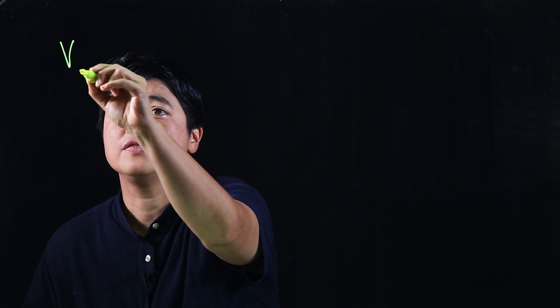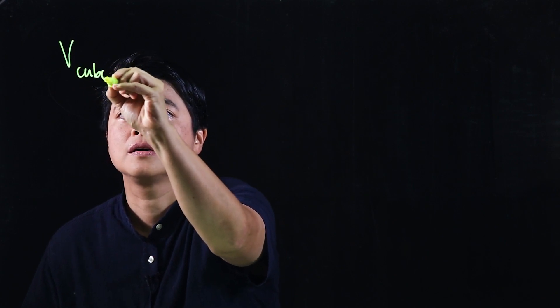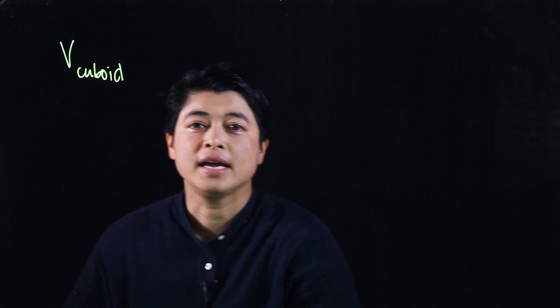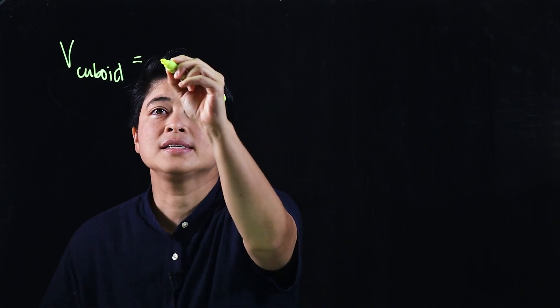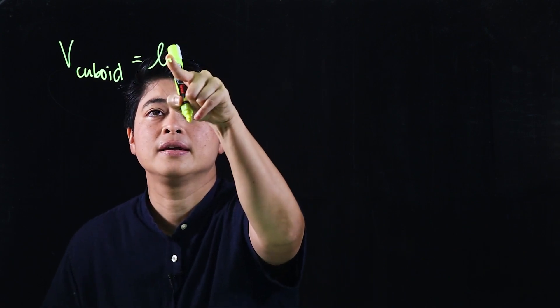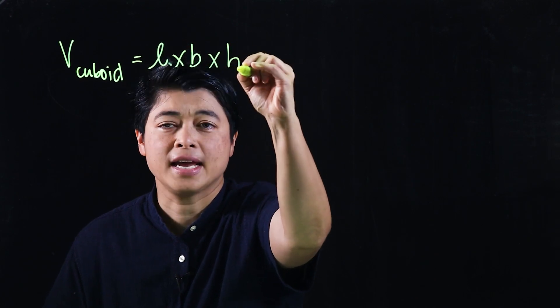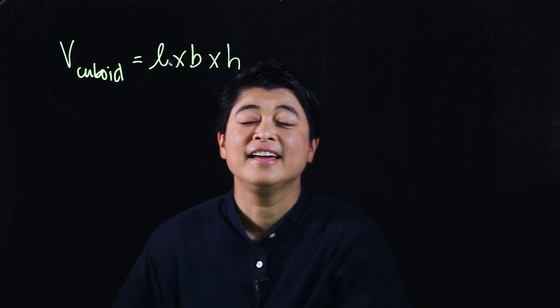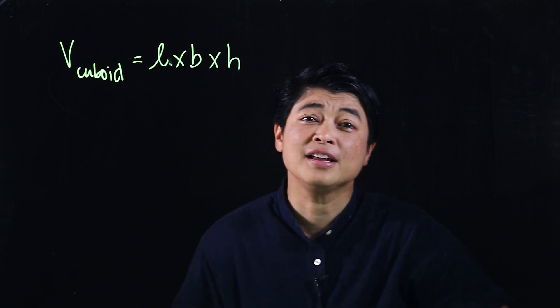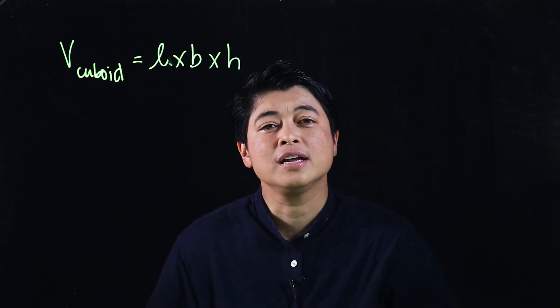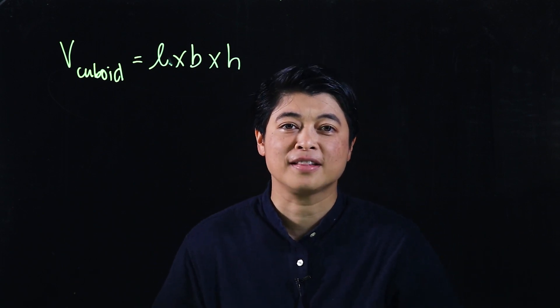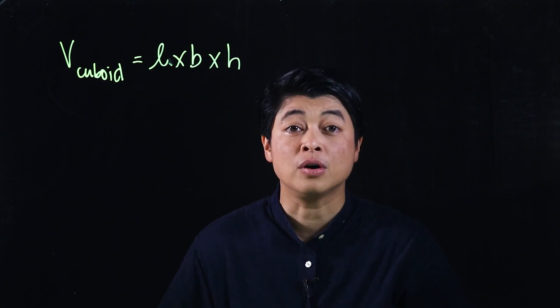The volume of a cuboid or prism is length times breadth times height. If you don't want to use breadth, then you can use width because that's what ordinarily it's called.